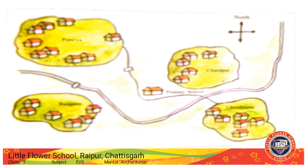Then draw a jungle between Pipalia and Chandanpur. After that, draw a narrow path from Chandanpur to Badgaon in a way that a primary school lies on its way. After that, show a hospital in the north of Chandanpur.